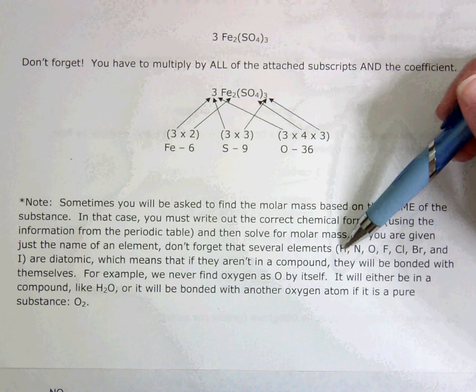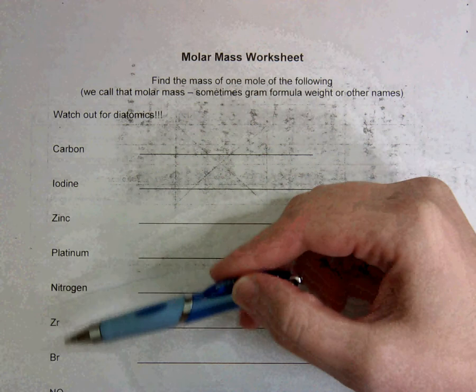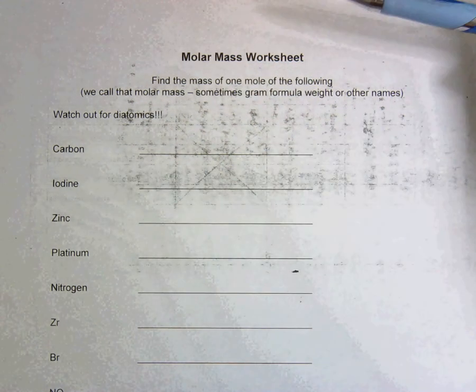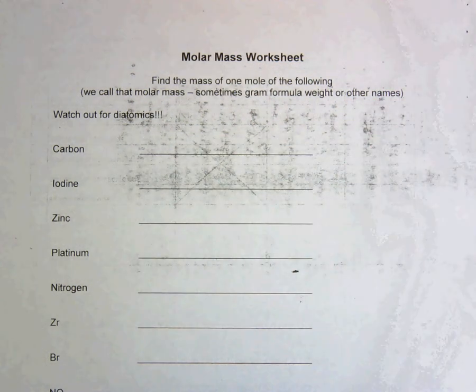So if you see any of these elements, H, N, O, F, Cl, Br, and I, if you see any of those in this list, hint hint you will, make sure that you put their mass times 2 because you will never find them alone.